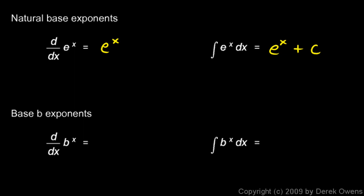Now let's come back to our reference sheet that we've been filling in as we go. The derivative of a base-b exponent, b^x, is b^x times the natural log of b.